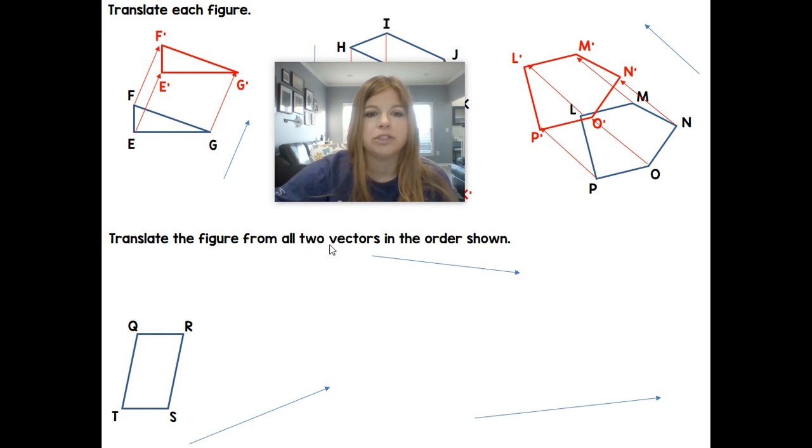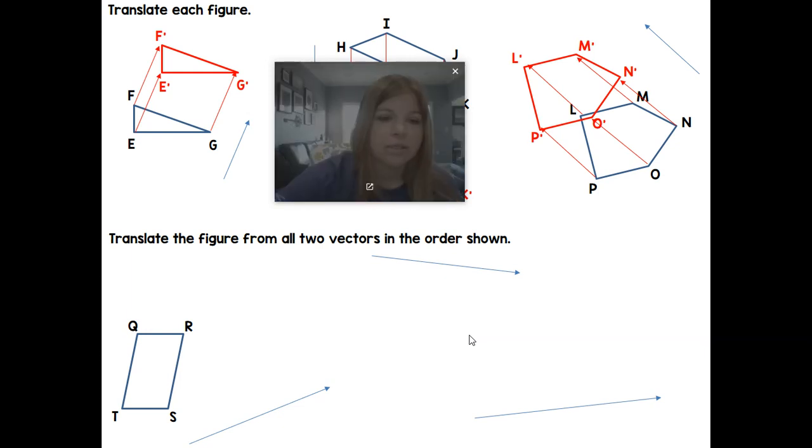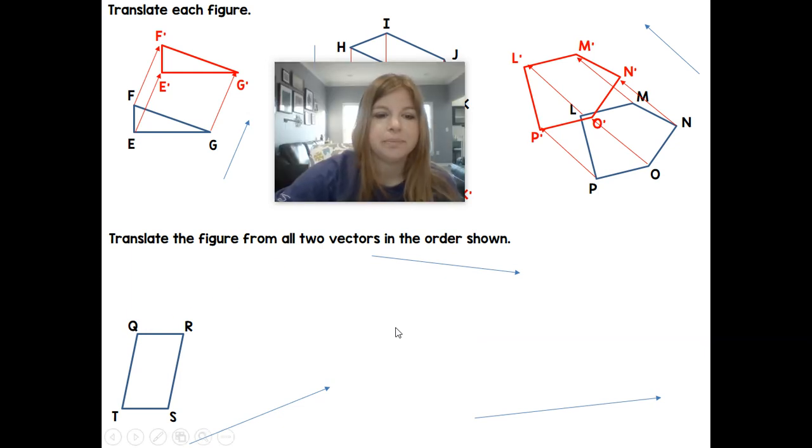This last one: translate the figure from all three vectors in the order shown. So I need to fix that, but this would be that if I was just following the pattern. So I'm going to take this, I'm going to translate it, then I'm going to take my image, translate it again, and then take that image and translate it one last time. So if I go ahead and I translate following along my first vector, Q prime, R prime, S prime, T prime, all of that same length. Here's my new image.